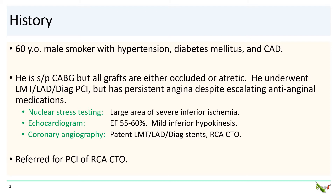The patient is a 60-year-old male smoker with hypertension, diabetes, and coronary disease. He received a CABG about 12 years ago, but all grafts are now either occluded or atretic. He did receive complex PCI of the left main, LAD, and diagonal about two years ago, but despite escalating doses of multiple antianginal medications, he has continued to have significant angina.